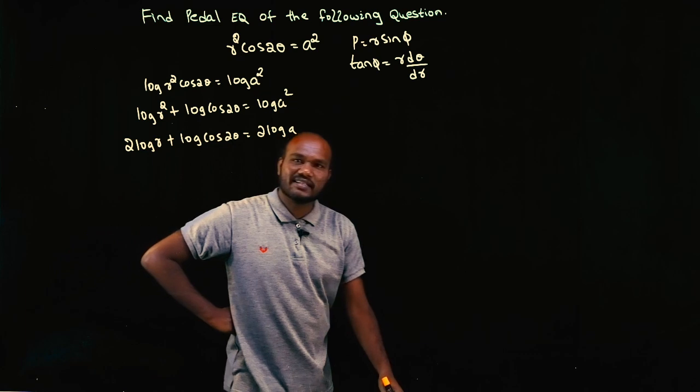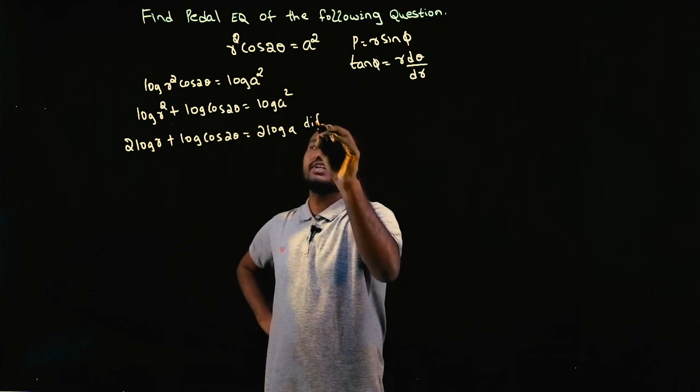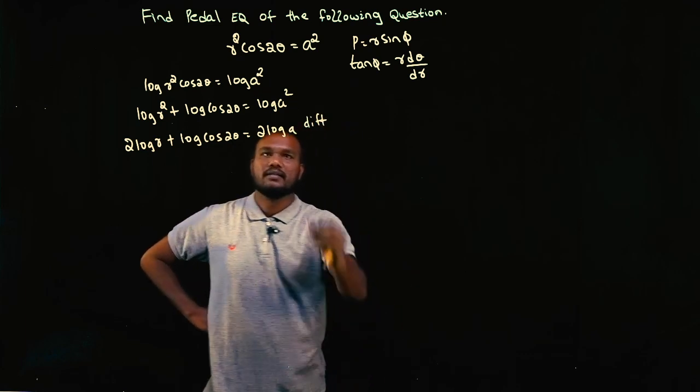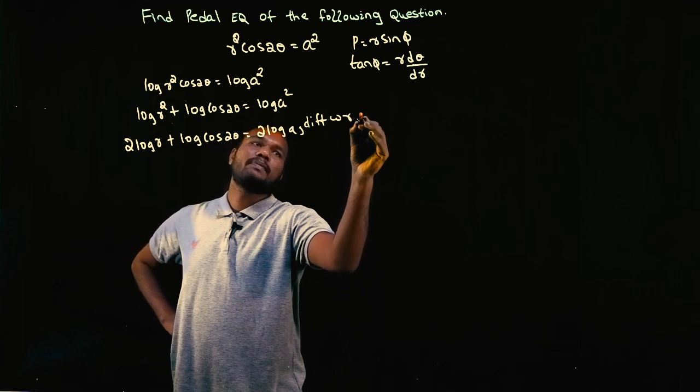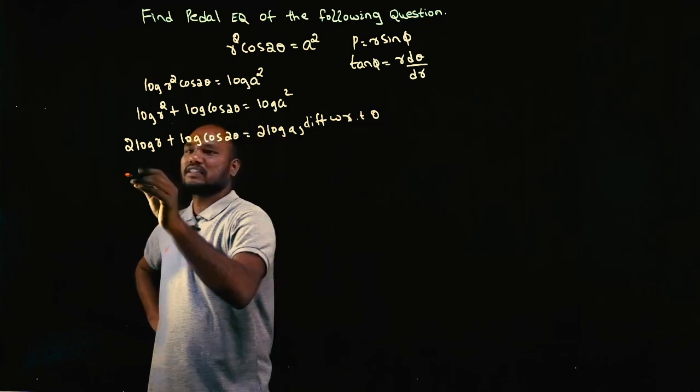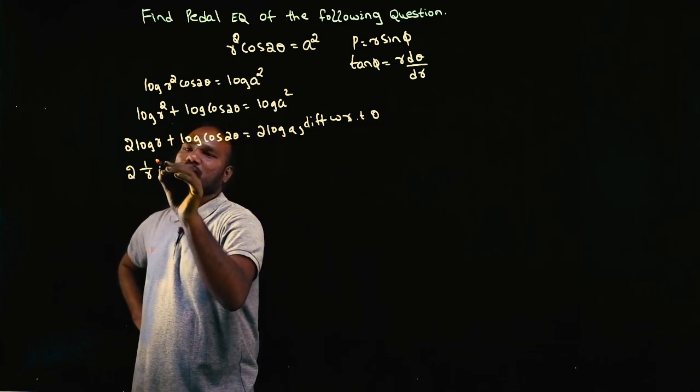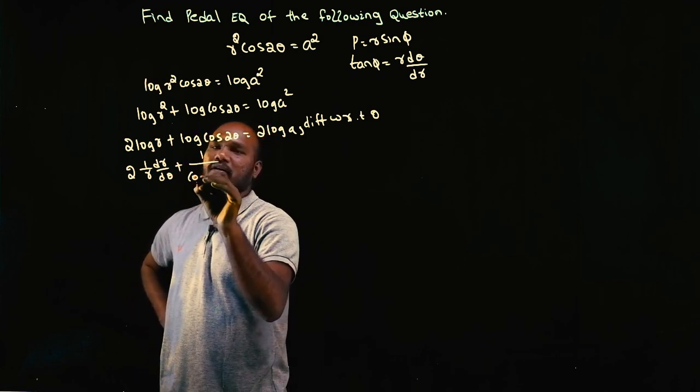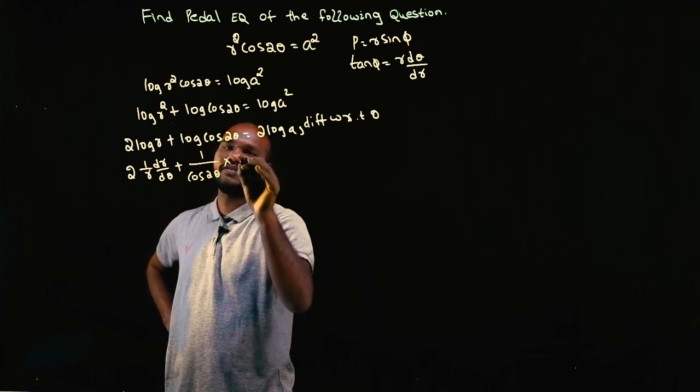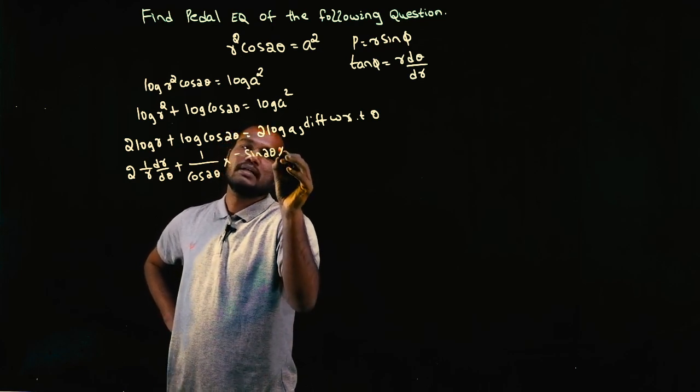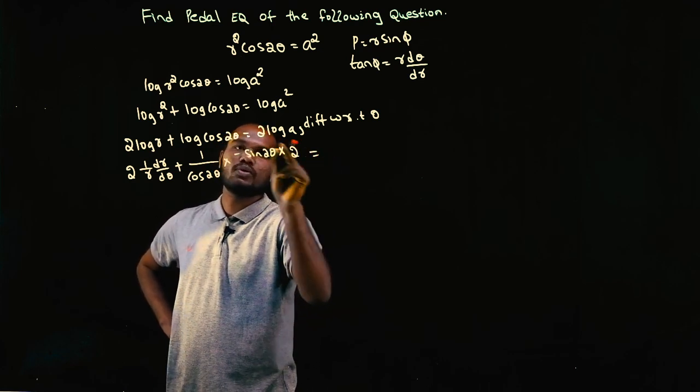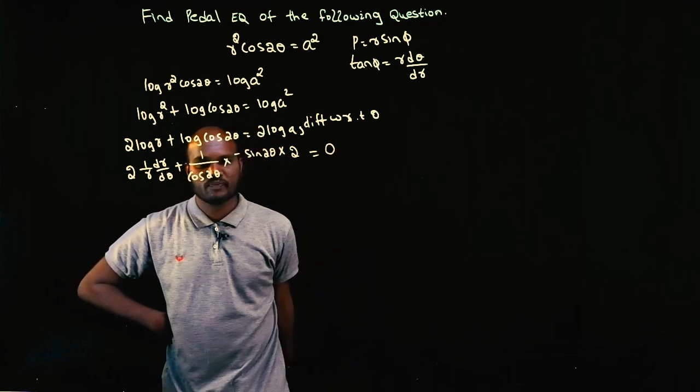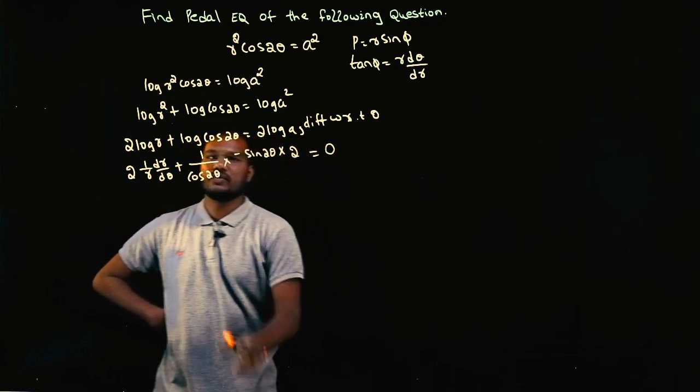Now the log format is done. What we have to do? We have to differentiate with respect to theta. Let's differentiate: 2 times log R differentiation is 1 by R dr by d theta plus log cos 2 theta is 1 by cos theta times cos theta is minus sin 2 theta times 2 theta differentiation is 2 equals log differentiation is 0.